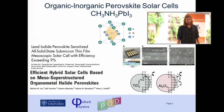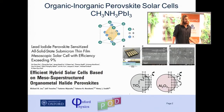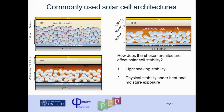As we've already heard, the efficiencies have increased from about 10% two years ago up to 17% certified. That means one of the main issues to solve now is stability. What I'd like to do today is discuss some of the different architectures that you'll find in the literature. We use three or four different architectures, and I'll focus on three today and see how we can play with these architectures to affect both the light soaking stability as well as thermal and humidity induced degradation.